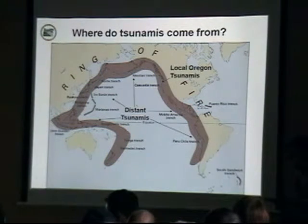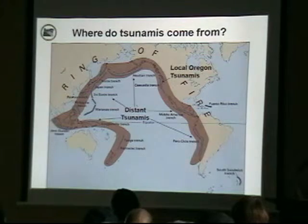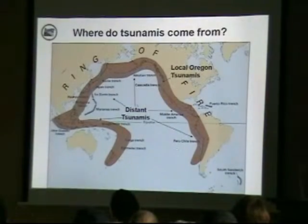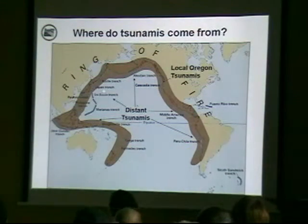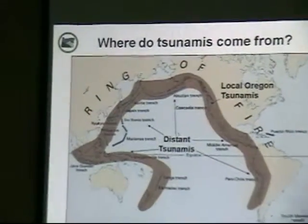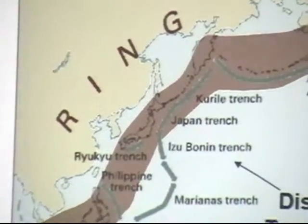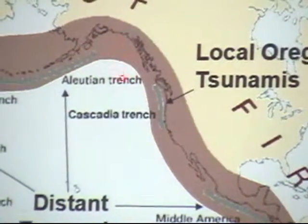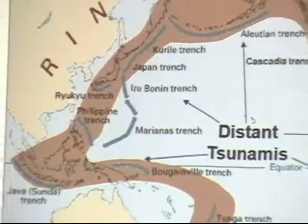Tsunamis come from a lot of different areas. We're now going to introduce local and distant tsunamis. You've probably heard of the ring of fire around the Pacific Ocean. Distant tsunamis can occur for Oregon from anywhere around this ring of fire — in 2011, the Japan Trench had a subduction zone event that sent us a distant tsunami. A local tsunami refers specifically to the Cascadia subduction zone, right off the coast of Oregon.